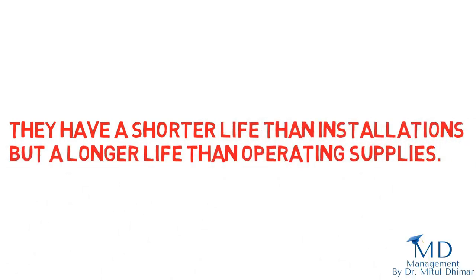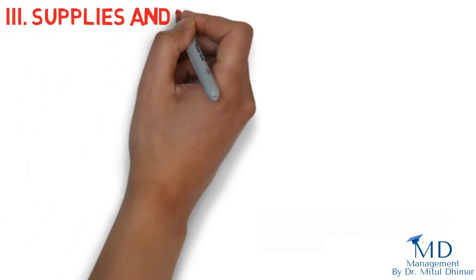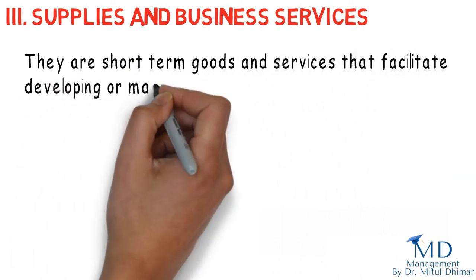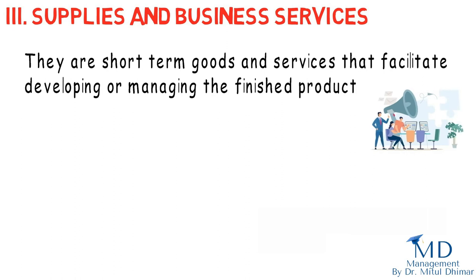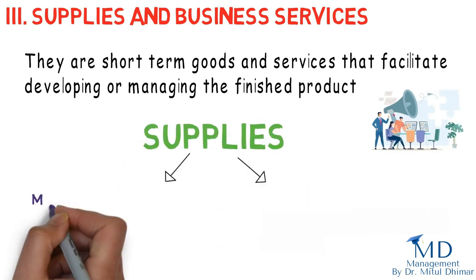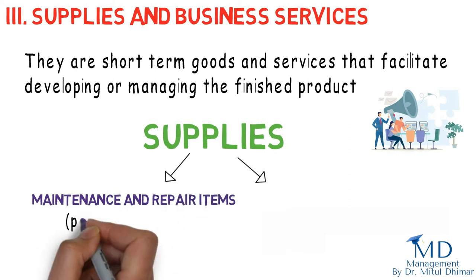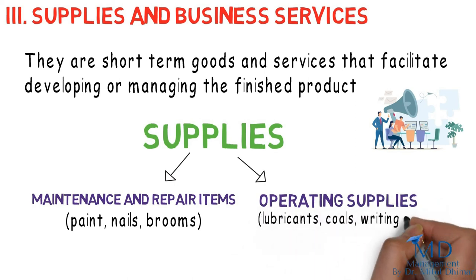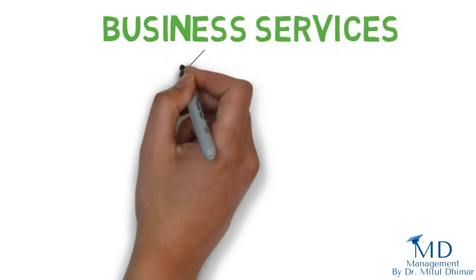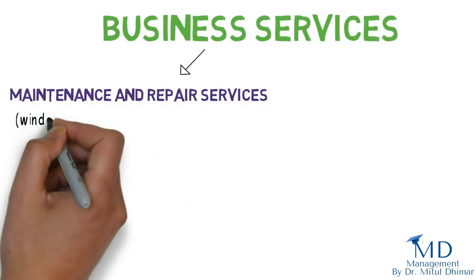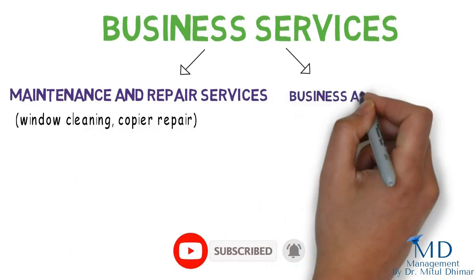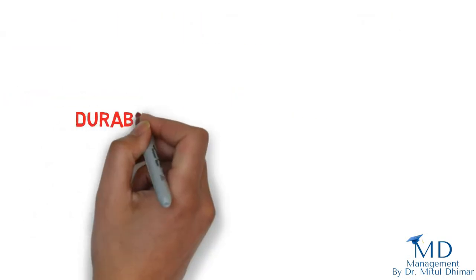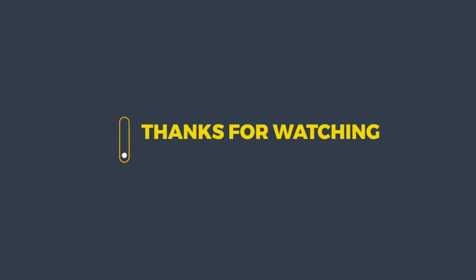Third: supplies and business services. They are short-term goods and services that facilitate developing or managing the finished product. Supplies are of two kinds: maintenance and repair items such as paint, nails, and brooms, and operating supplies such as lubricants, coal, writing paper, and pencils. Business services include maintenance and repair services such as window cleaning and copier repair, and business advisory services such as legal, management consulting, and advertising. These were the points covered in the video. Thanks for watching.